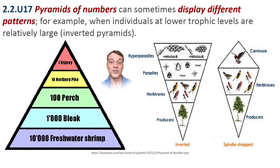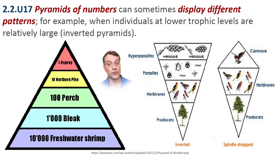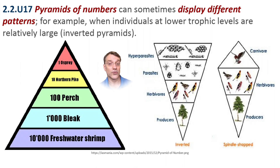A pyramid of numbers simply counts organisms at each trophic level. Interestingly, these can sometimes be inverted, particularly when individuals at lower trophic levels are relatively large. For example, one tree — which is a producer — might support thousands of insects, which are the consumers, and those insects may support dozens of birds, which might then support one or two predatory birds or other hunters like snakes.